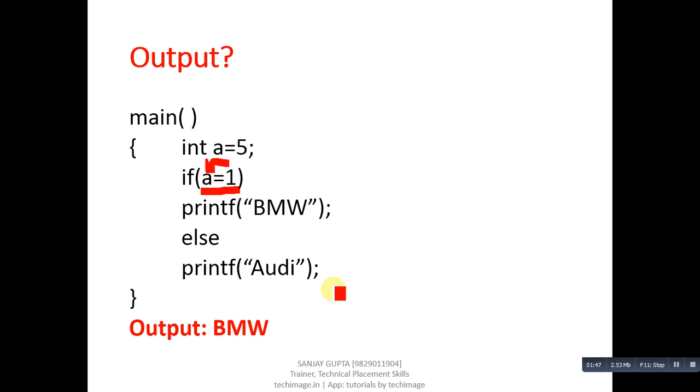Output is BMW. If we use double equals to operator for comparison, then output will be the else branch.